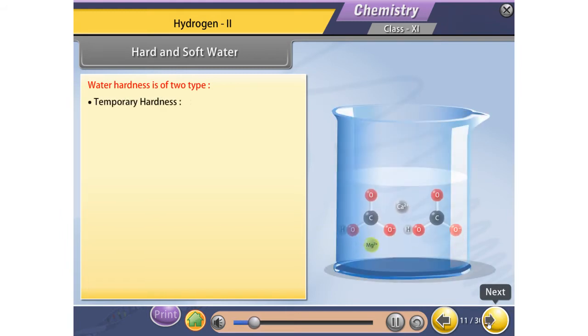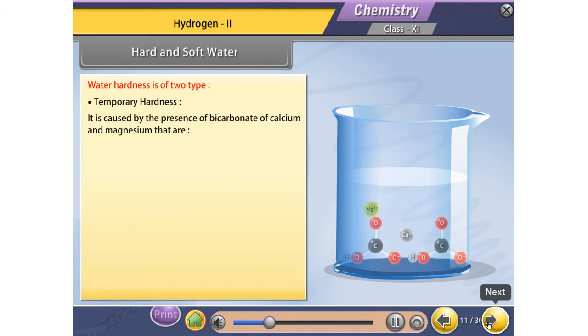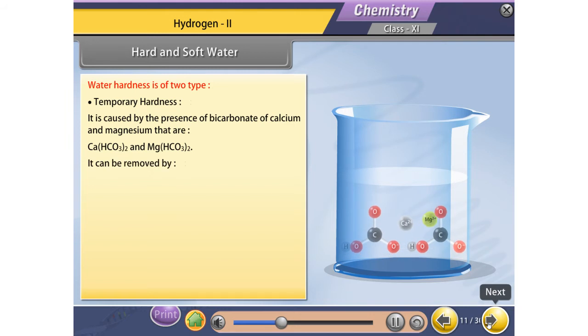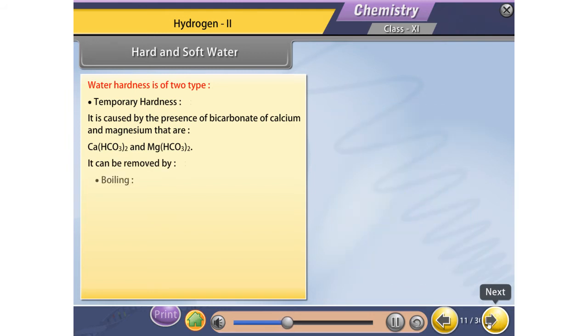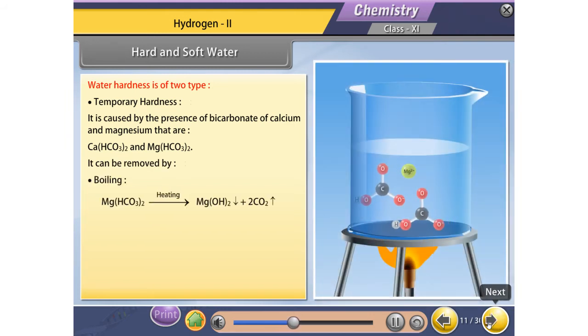Temporary hardness: It is caused by the presence of bicarbonate of calcium and magnesium. It can be removed by boiling. Soluble bicarbonates change to carbonates which are insoluble and get precipitated.